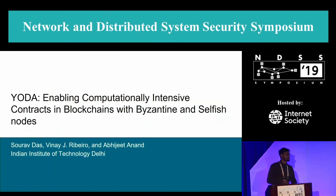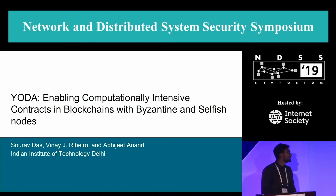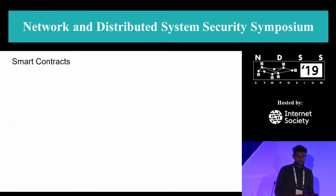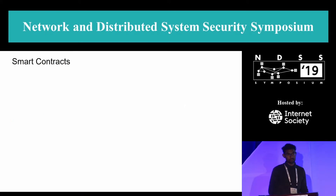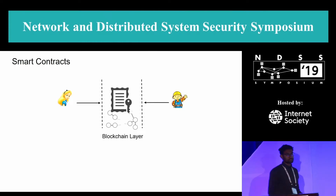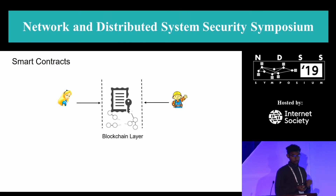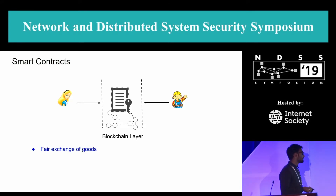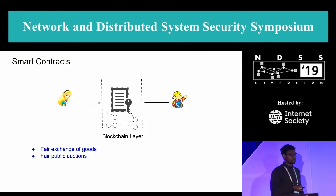This is joint work with Vinay Rivairo and Abhijit Anand from IIT Delhi. Several blockchains allow execution of immutable codes called smart contracts. Using smart contracts, two mutually untrusted parties can agree on a program logic whose correct execution will be guaranteed by the underlying blockchain. For example, parties can do fair exchange of goods or hold public auctions.